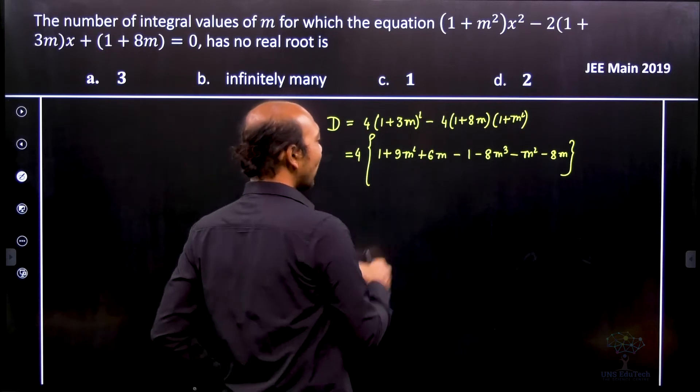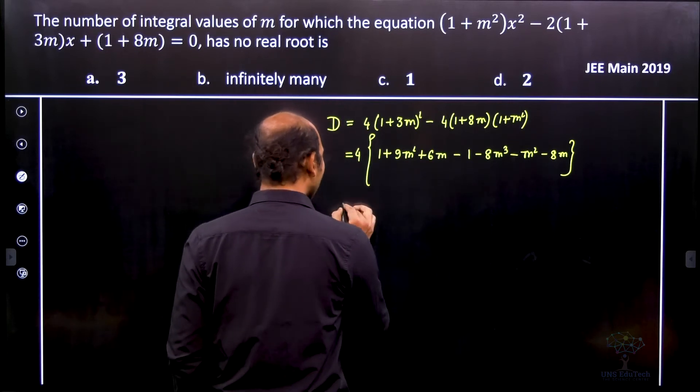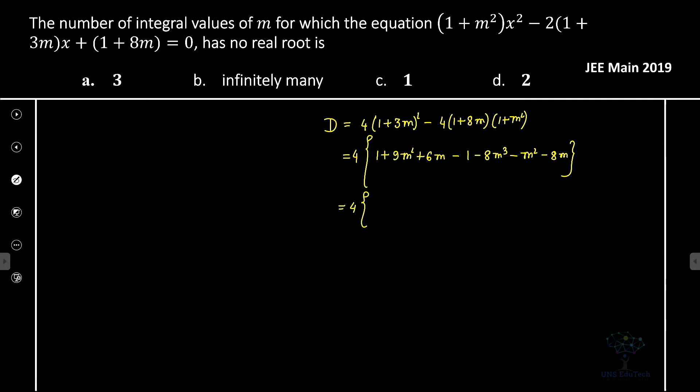That's it. Now we have to go ahead and simplify that. So 4 times, obviously that 8m³ will come, then we have plus 8m² and we have minus 2m. That's it.